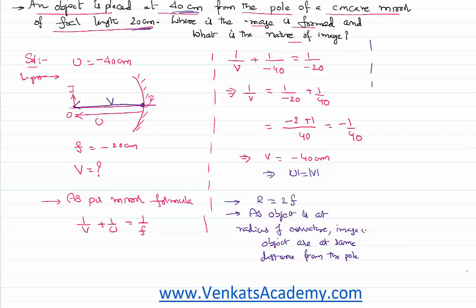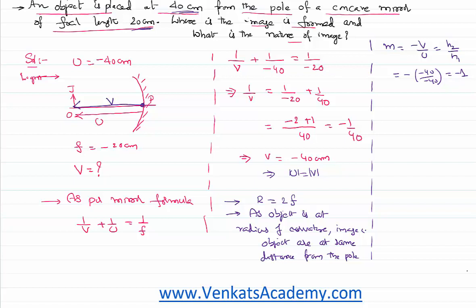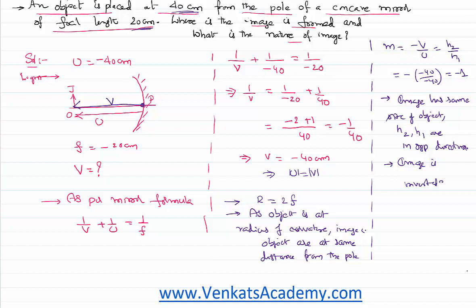Since both u and v have negative signs, they are in the same direction. Using the magnification formula: m = -v/u = -(−40)/(−40) = -1. The magnitude is 1, meaning the image has the same size as the object. The negative sign tells us that h2 and h1 are in opposite directions — meaning the object is upright but its image is inverted.